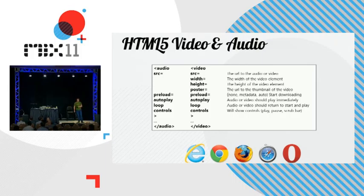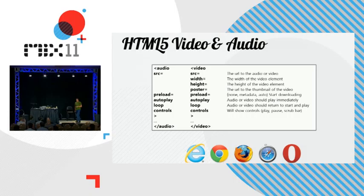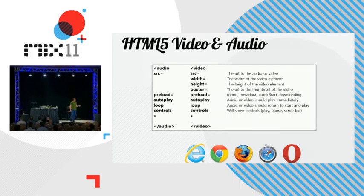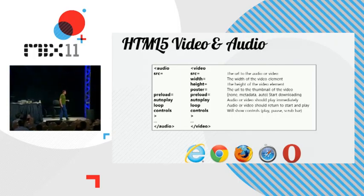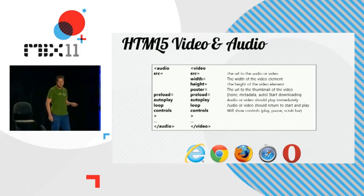For video you have a width, a height, and a poster image. The poster image is going to display until the video is ready or the first frame is there to play back on your site. There are other attributes like preload, which says whether the video starts downloading automatically or whether you just get the metadata to know the length or resolution. Autoplay is obvious — it's as it says. Looping will loop the video.